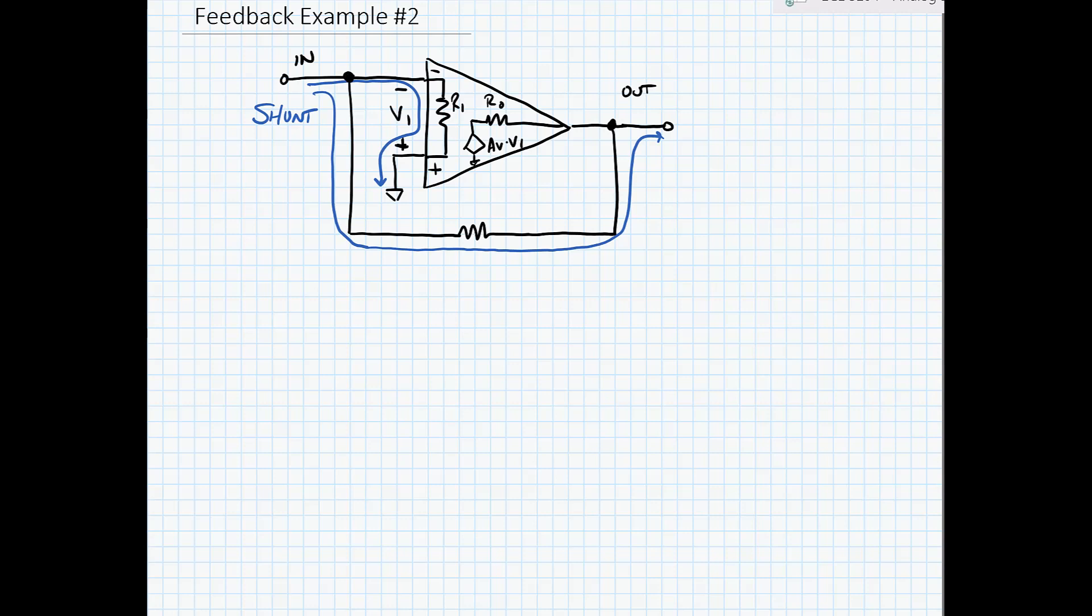Now from the output again I can either go through the amplifier or through the feedback network. So this is also a shunt connection.